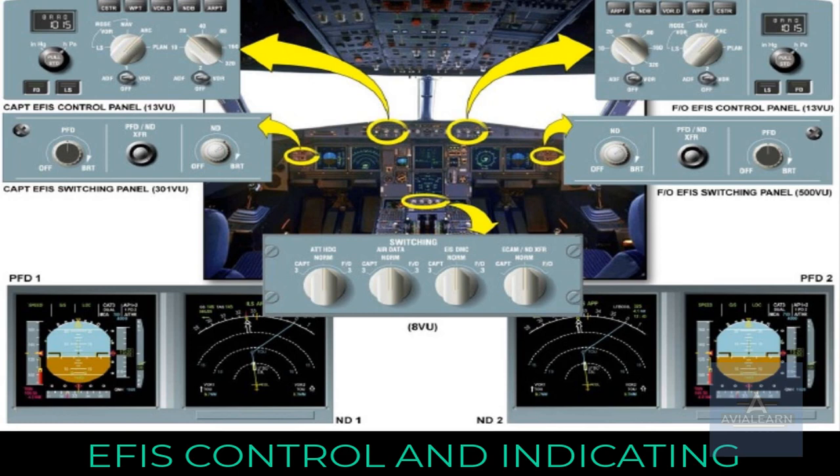Just below the EECOM screens, on the center pedestal, there is a switching panel with two rotary selectors on the right to restore data to the EFES and EECOM displays in abnormal operation.